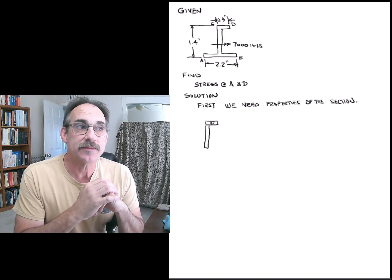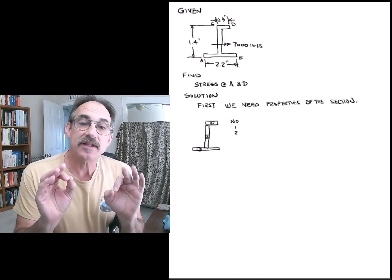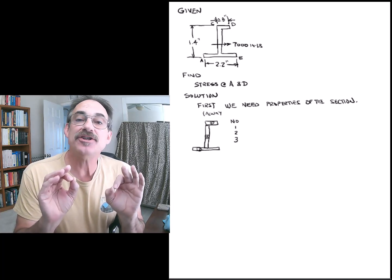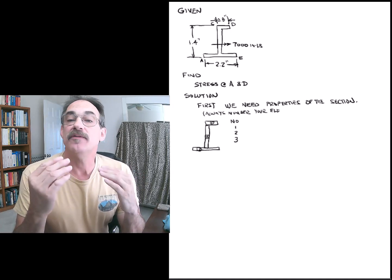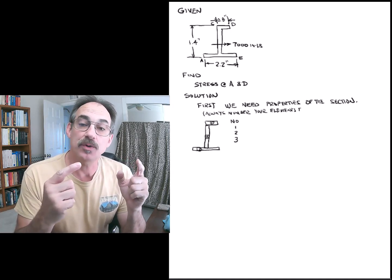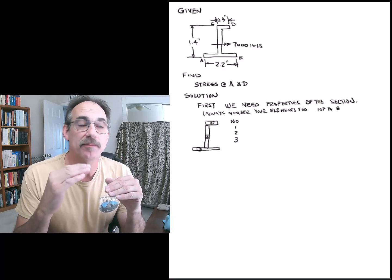The way we do this, we start by re-sketching the section and identifying each element, being careful not to double count for anything. You can see we've numbered the sections 1, 2, 3, starting from top to bottom.